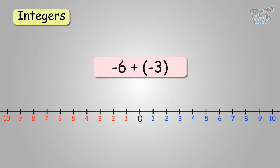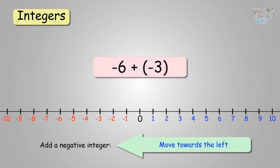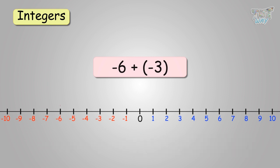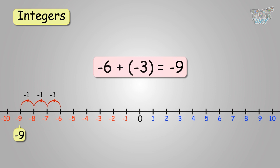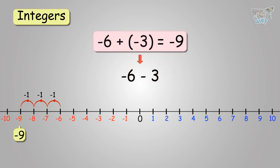Now, negative 6 plus negative 3. We have to add a negative integer, and whenever we have to add a negative integer, we move towards the left. Start at negative 6, then move 3 places towards the left. So, the final answer will be negative 9. Also, if we don't have the number line, remember: a plus sign and minus sign together becomes a minus. So, it will be negative 6 minus 3. And whenever we have two negative signs together, we perform addition. Minus 6 minus 3 equals negative 9.